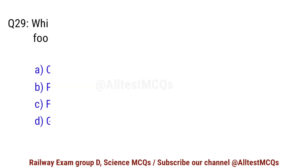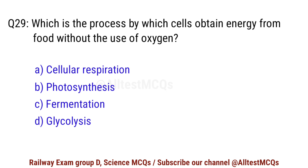Question No. 29. Which is the process by which cells obtain energy from food without the use of oxygen? Right option is C. Fermentation.